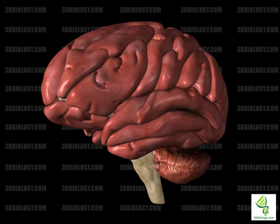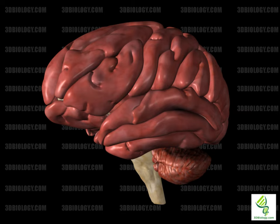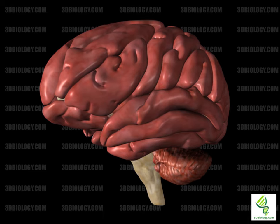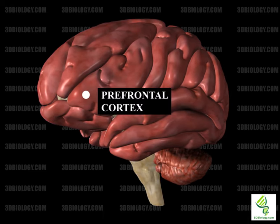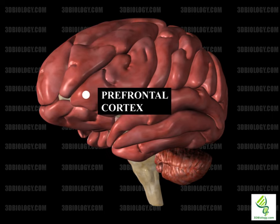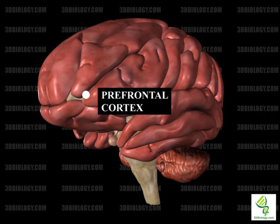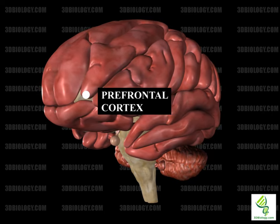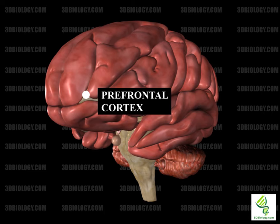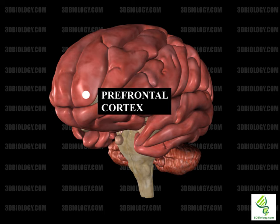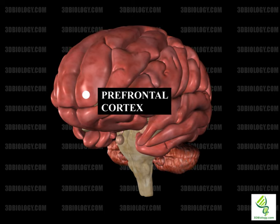The premotor as well as the primary motor cortex are found in the frontal cortex. The prefrontal cortex can be found in the anterior frontal lobe. It is where executive function is carried out and high-level filtering — meaning acceptable behavior, predicting outcomes, determination of good and bad, and working toward a goal. It receives connections from the brainstem arousal systems.